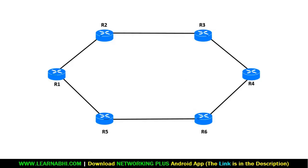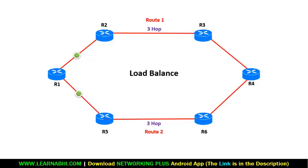Let's take another example. There are six routers connected in the network where Router 1 wants to send data to Router 4. Here we have two possible routes — Route 1 and Route 2. In this scenario, both routes have the same number of hop counts, that is 3. The router will send packets via both routes at the same time, managing load balancing, and the data will reach the destination faster.